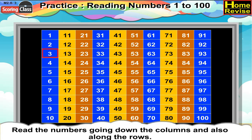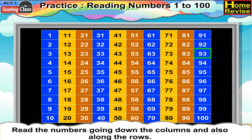Now, the third row begins with 3. The next number is 13, which is 3 plus 10. And similarly, it is 23, 33, 43, 53, 63, 73, 83, 93. Now, the fourth row begins with 4. The next number is 14, which you get by adding 10 to 4. Similarly, further it is 24, 34, 44, 54, 64, 74, 84, 94.